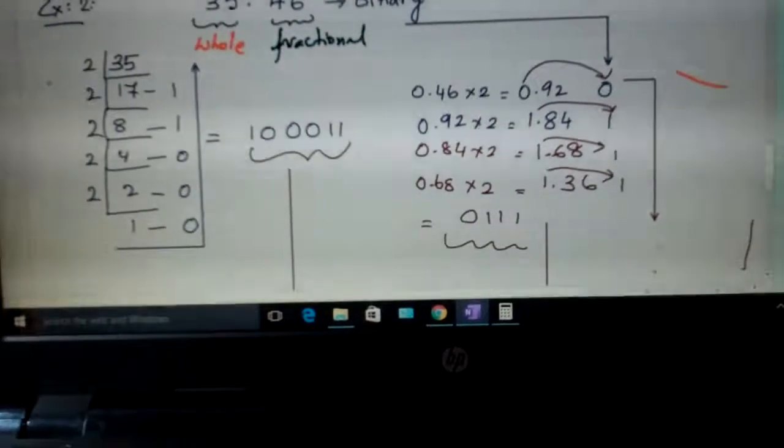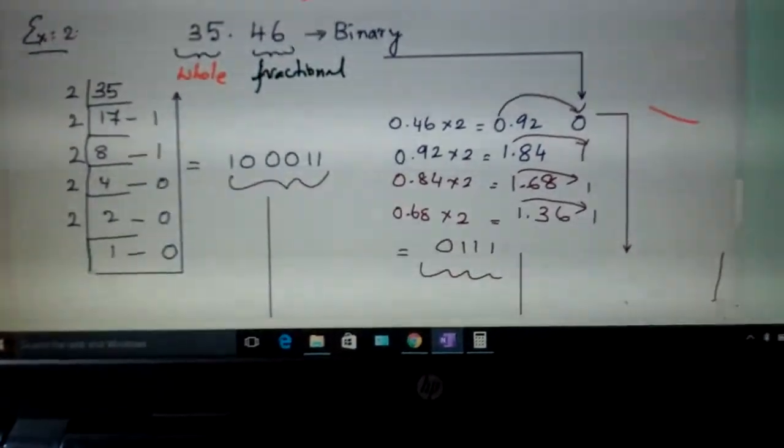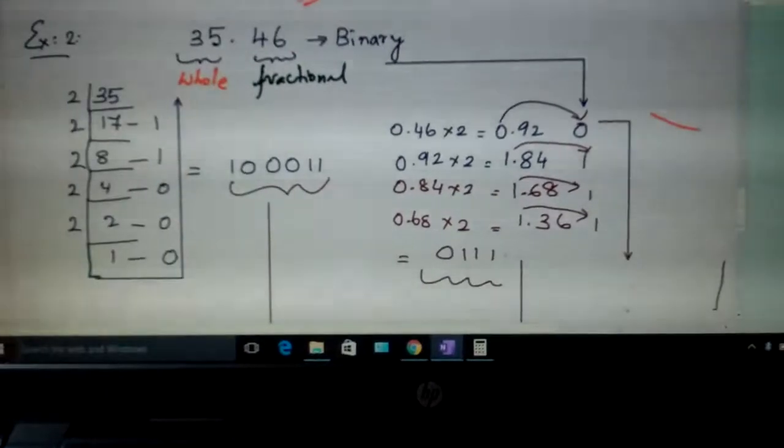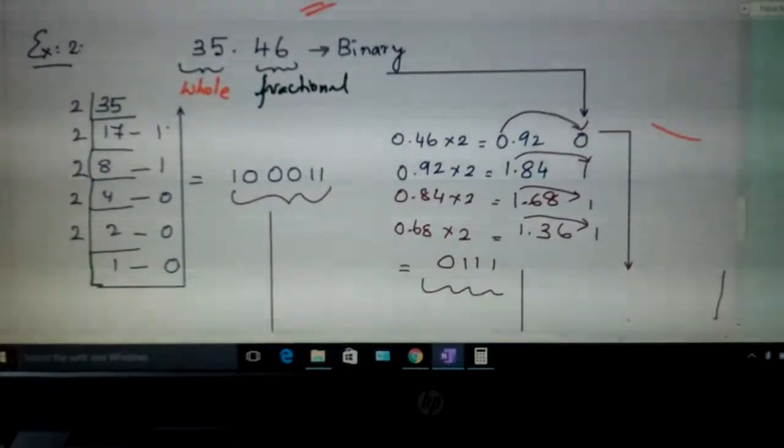As before, convert 35 into binary by going on dividing by 2. Write this in the reverse order: 100011.